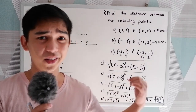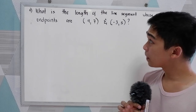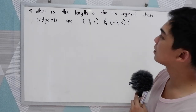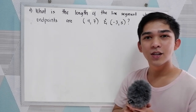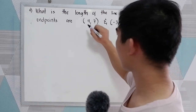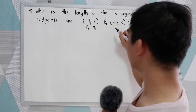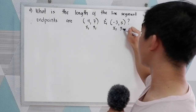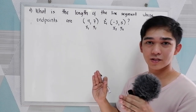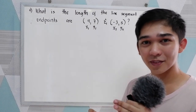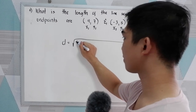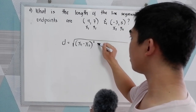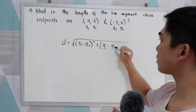Let us have more exercises. Our fourth example: what is the length of the line segment whose endpoints are (4, 7) and (−3, 5)? Let us label our points: x₁ = 4, y₁ = 7, x₂ = −3, and y₂ = 5. We're going to get the distance between the endpoints using the distance formula: d equals the square root of (x₁ − x₂)² + (y₁ − y₂)².